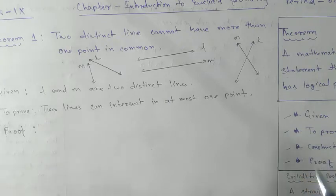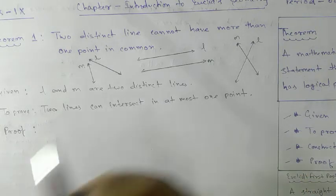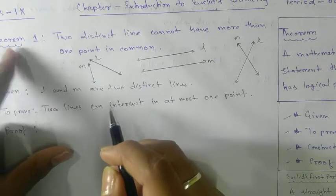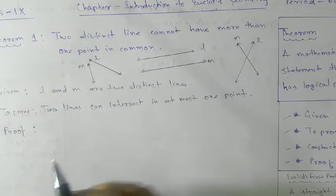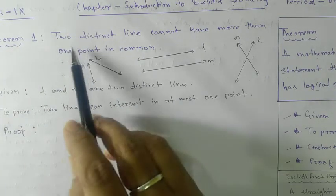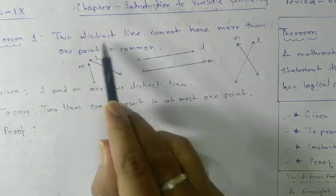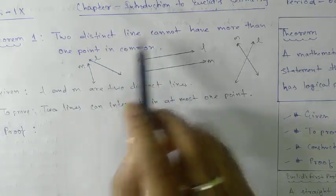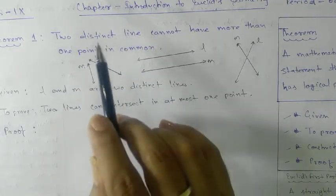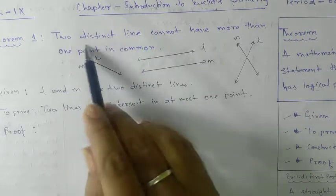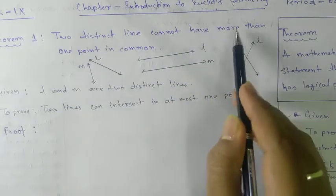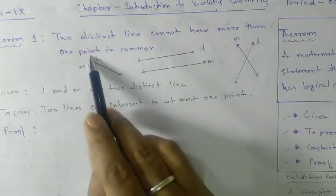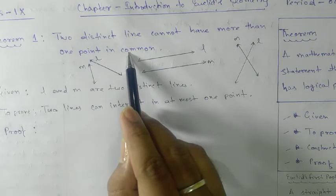So here we are going to see a very important theorem in this chapter. The theorem states: two distinct lines — distinct means different lines — two different lines cannot have more than one point in common.